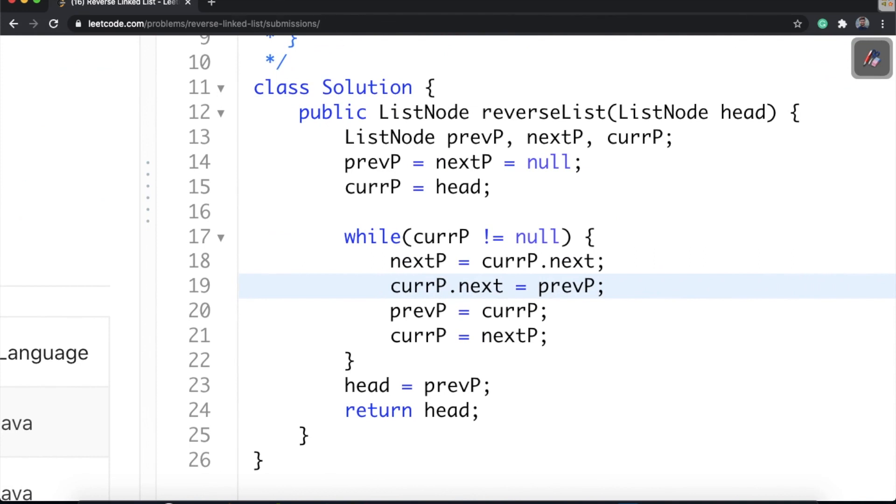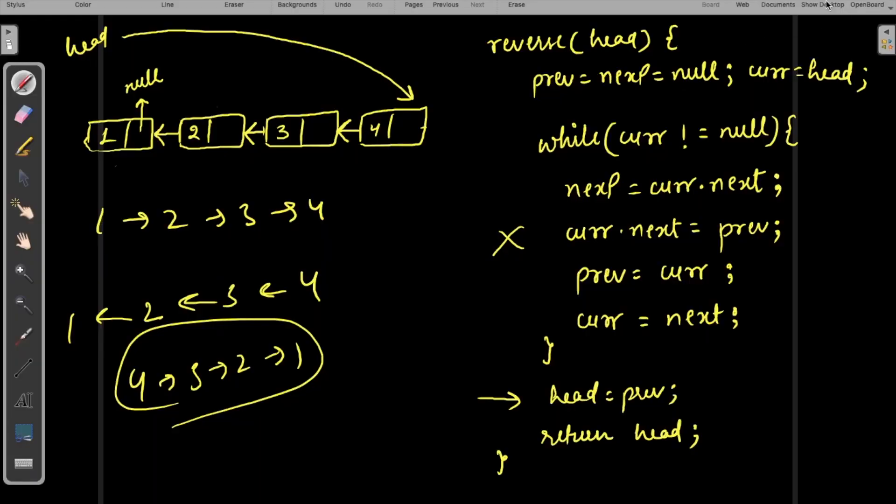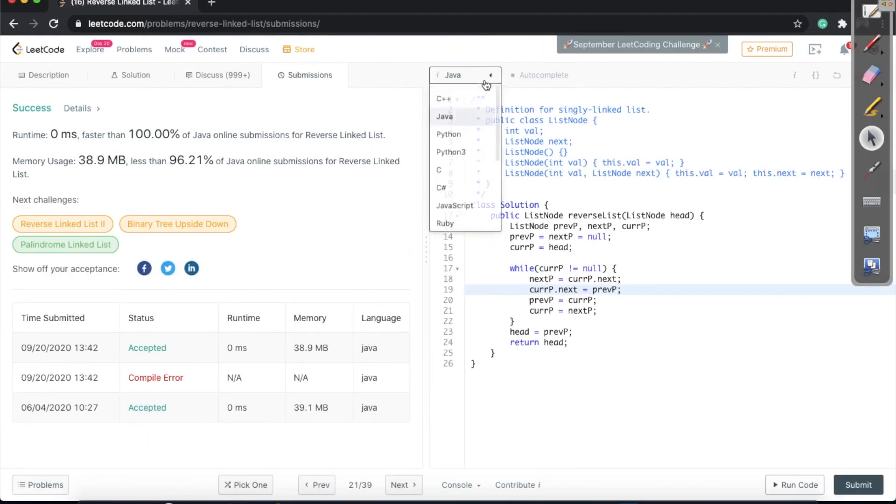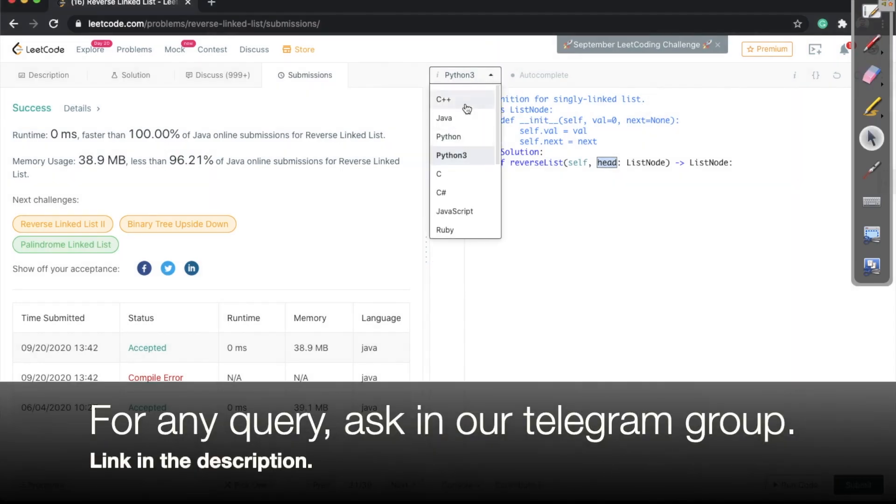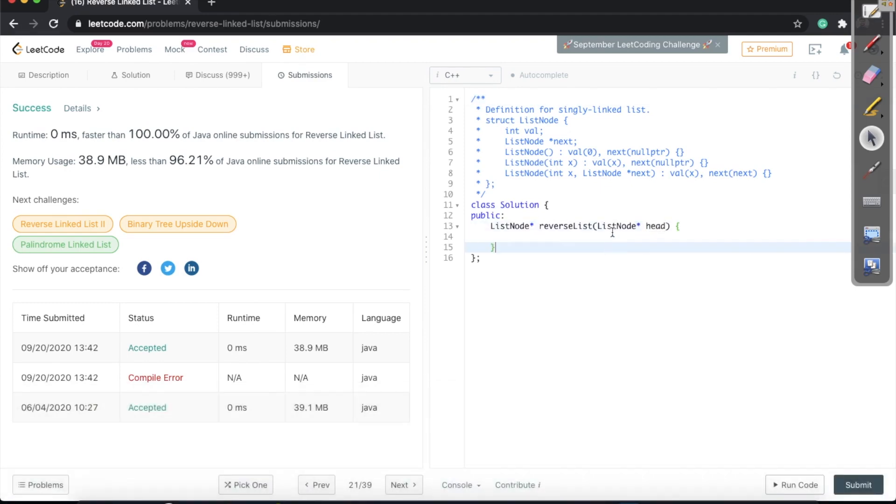If you want to use Python code, basically you would have self and head as parameters. Where we have head in Java, we have self.head in Python. The same pattern you can follow for C++. If you want to understand the syntax and pointers, you can go and watch my previous videos where I explain all the connectivity.